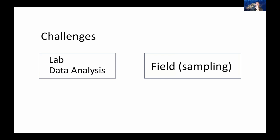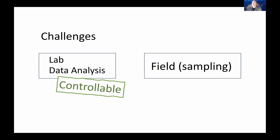Now let's talk about specific challenges of genetic monitoring and some recent methodological advances. When we think of genetic monitoring, we have three discrete components: the first two are laboratory and data analysis, and the third is field sampling. The laboratory and data analysis parts are largely controllable and predictable — we can repeat things if they go wrong, and things become more routine as monitoring progresses.